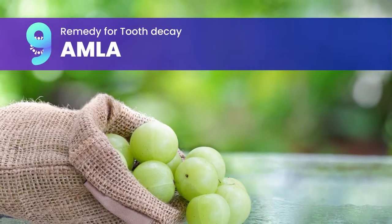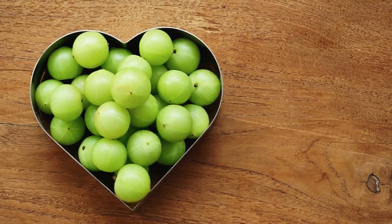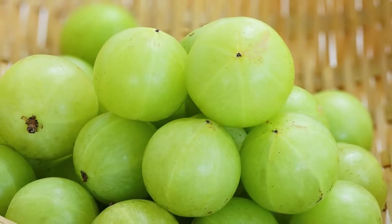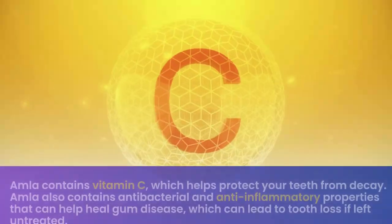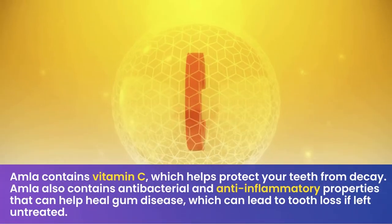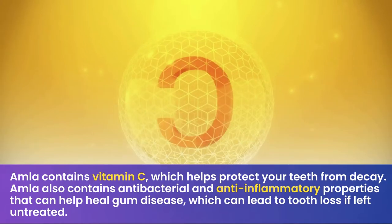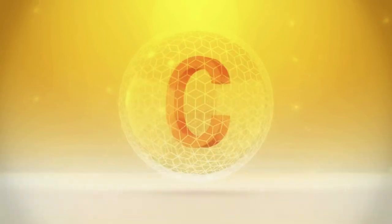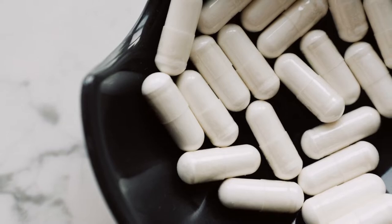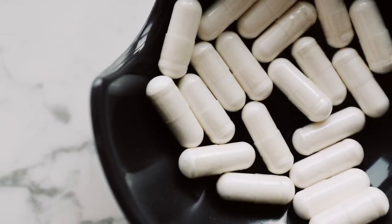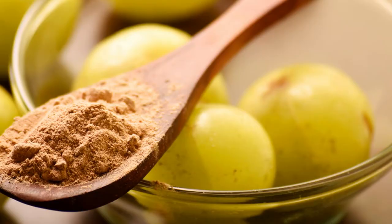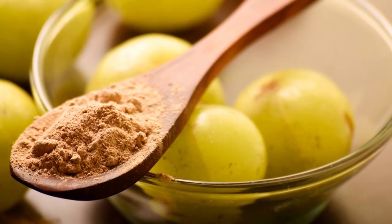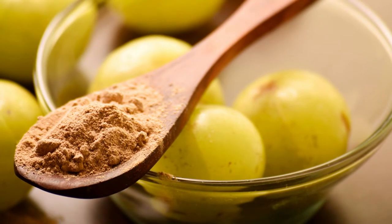Amla, also known as Indian gooseberry or emblica, is one of the oldest Ayurvedic herbs and has been used in India for thousands of years to treat a wide variety of health problems. Amla contains vitamin C, which helps protect your teeth from decay, and also has antibacterial and anti-inflammatory properties that can help heal gum disease. Amla is available in capsule form, but it's best to use the fresh fruit. You can find amla powder at most health food stores and add it to smoothies or sprinkle it on yogurt or cereal.